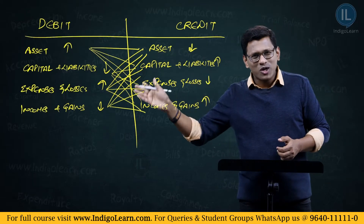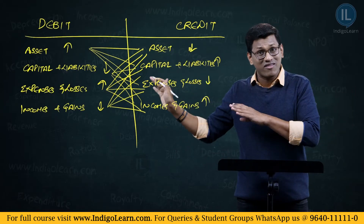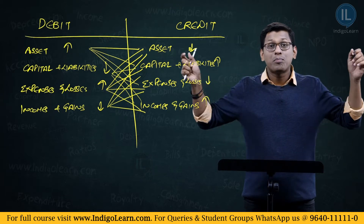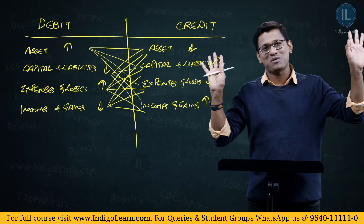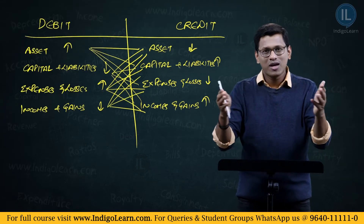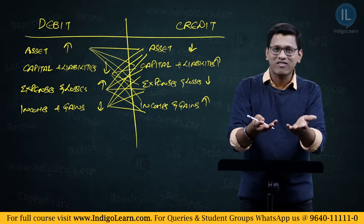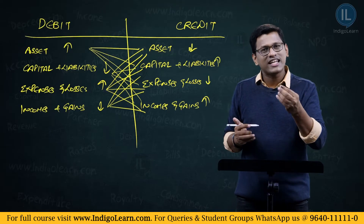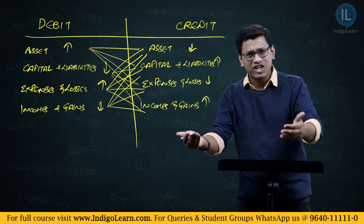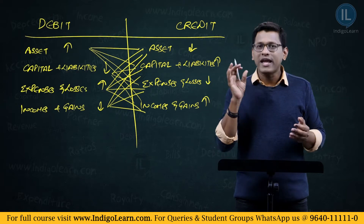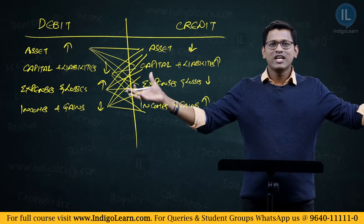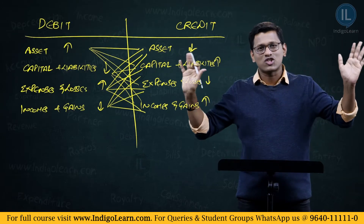The moral of the story: you have four items on the debit side — four possible debit impacts — and four items which can possibly have a credit impact. Every journal entry is a pair of one item on the debit side and one item on the credit side. That's all. Every transaction written in accounting language is called a journal entry.